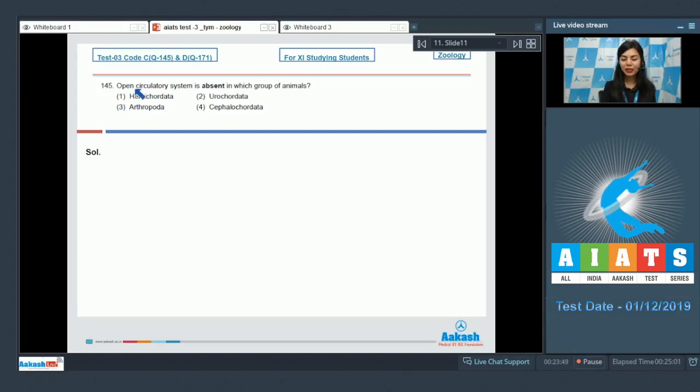Question number 145 students: Open circulatory system is absent in which group of animals? Hemichordata, urochordata, arthropoda, cephalochordata. We are looking for a group of animals here which have a closed circulatory system.